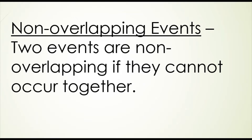Two events are non-overlapping if they cannot occur together. For example, if I flip a coin, I'm either going to get heads or tails — those two events can't happen at the same time. Or if I roll a die, I'm going to get a 1, 2, 3, 4, 5, or 6, but I can't get both at the same time. So those are non-overlapping events. You can think of the Venn diagrams we did earlier — these would be our disjoint sets, with no overlap between them.